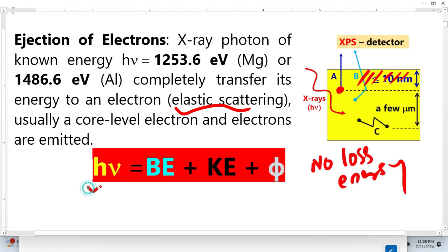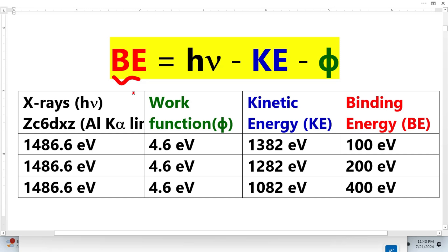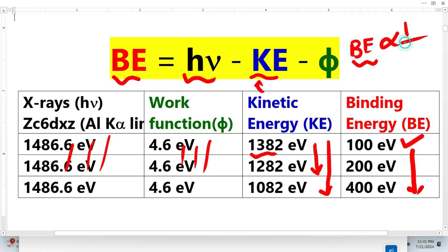The photon energy is distributed between the binding energy and the kinetic energy of the photoelectron. For example, if the photon energy is 1000 eV and the binding energy is 900 eV, the kinetic energy of the photoelectron will be 100 eV. Using the famous XPS equation rearranged for binding energy: the X-ray photon energy and the spectrometer work function are both constant, so binding energy is inversely proportional to the kinetic energy of the photoelectrons.